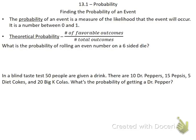Today what we're going to be learning about is probability, which you probably have done before. So when we're talking about theoretical probability, what we're going to do is take the number of favorable outcomes — which is what we want to happen — on top, and then divide it by the total number of outcomes.